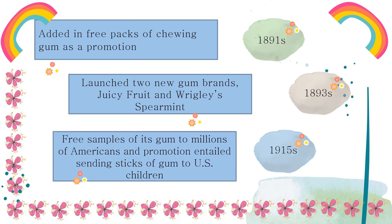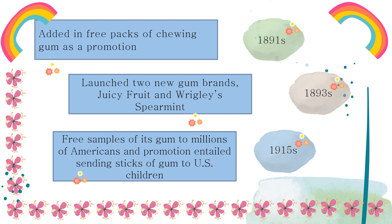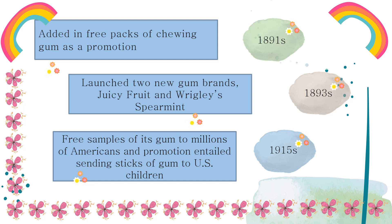Because the chewing gum field had grown crowded with competitors, Wrigley decided to make his products stand out by spending heavily on advertising and direct marketing. In 1915, the Wrigley company kicked off a campaign sending free samples of its gum to millions of Americans listed in phone books. Another promotion entailed sending sticks of gum to U.S. children on their second birthday.